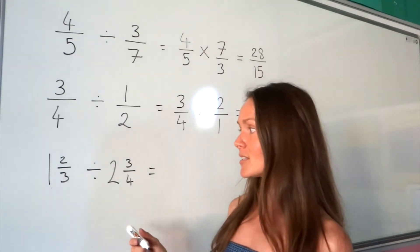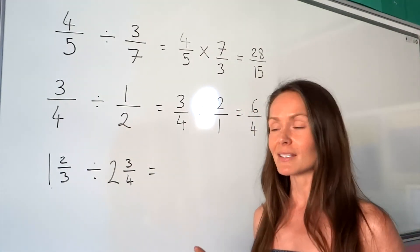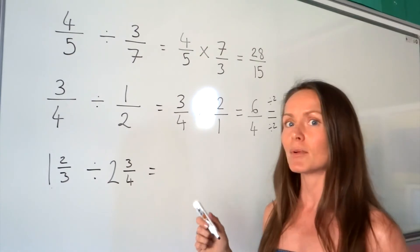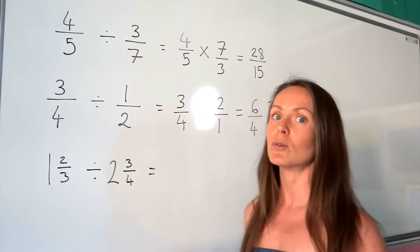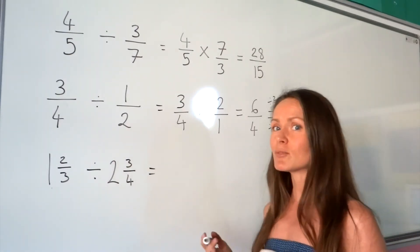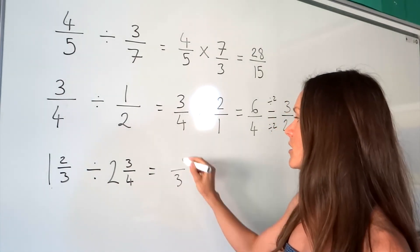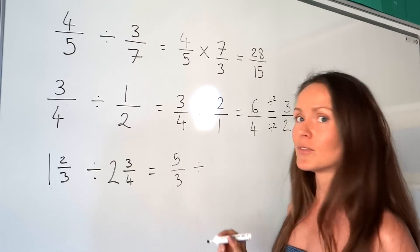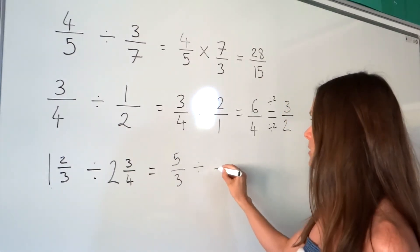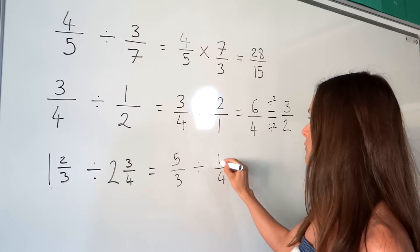Now, in the last example, we're dividing two mixed numbers. Before I can do the division, I must turn these mixed numbers into what we call improper fractions. Sometimes we call these top-heavy fractions. So if you don't know how to turn these into improper fractions, I have got another video showing you how to do so. But just quickly, if you want a reminder,